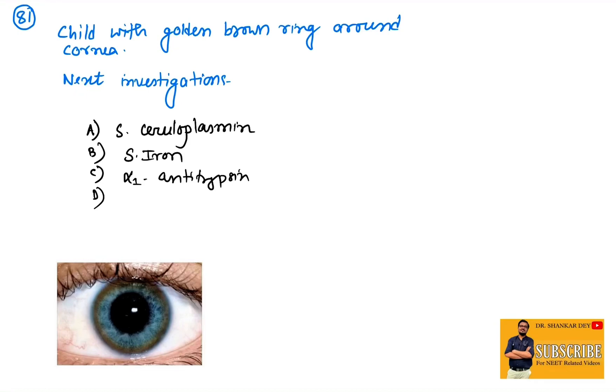Hello everyone, welcome to the ninth video of NEET PG 2023 recall question discussion, starting with question number 81. A child with golden brown color ring around the cornea, what is the best next investigation to diagnose the case? Although the image was not given, I think in the exam you can see the presence of a brown color ring around the cornea.